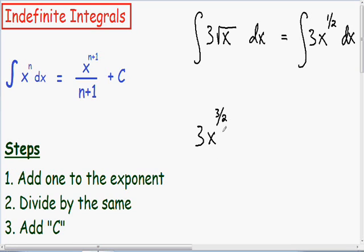After you add one to the exponent, you need to divide by the same. So since we have an exponent of three over two, we're going to divide by three over two. And we can't forget about our last step—you always need to add C.